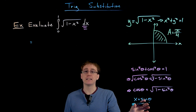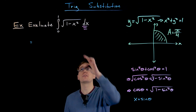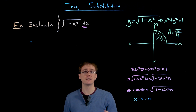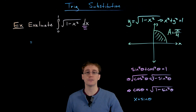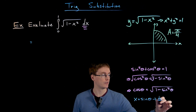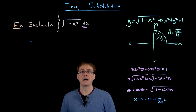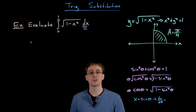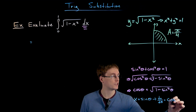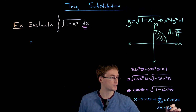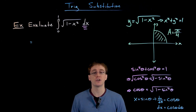We know each x inside our integrand is going to be replaced with sine of theta. We also have to translate the differential of x into the differential of theta. We take our substituting equation, x equals sine of theta, and differentiate it with respect to theta. The derivative of x with respect to theta is dx/dθ, and differentiating the right-hand side gives us cosine of theta. Multiplying both sides by dθ, we see that dx equals cosine of theta dθ.